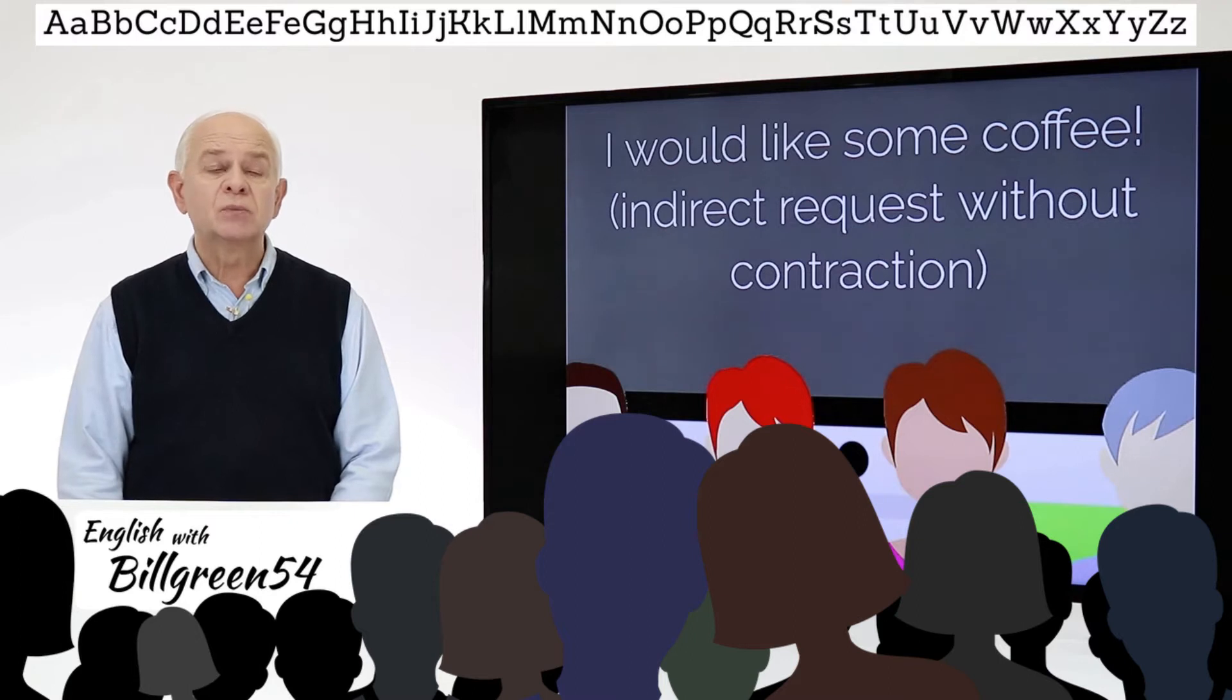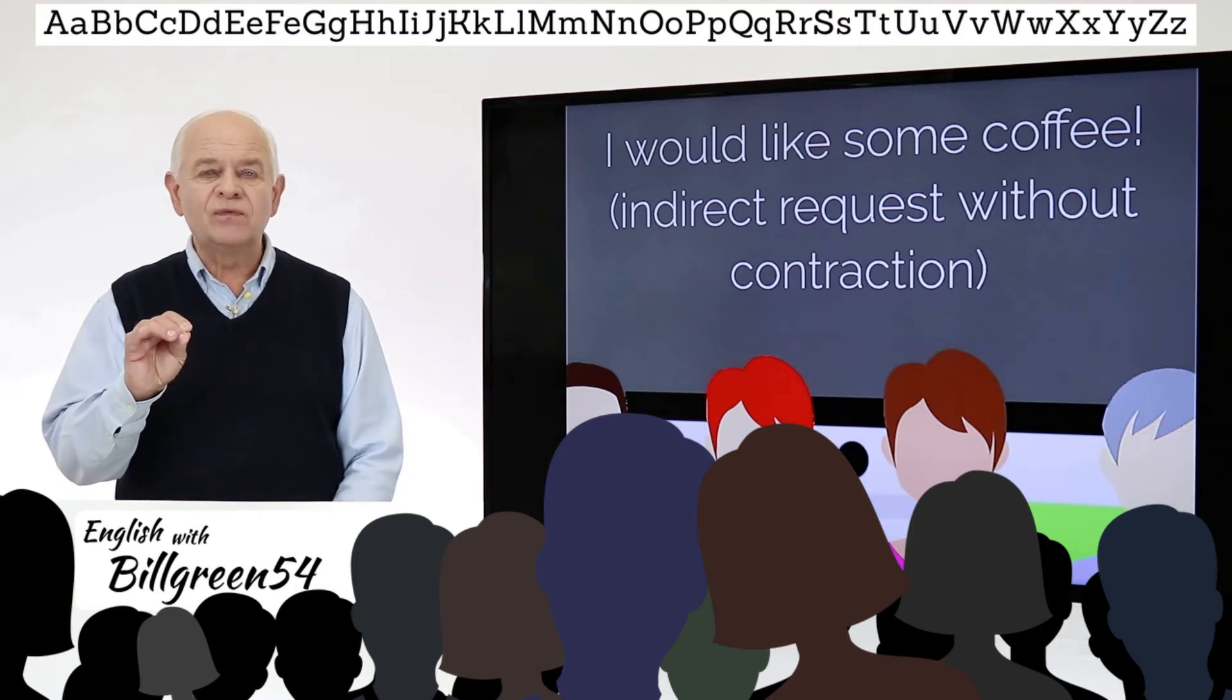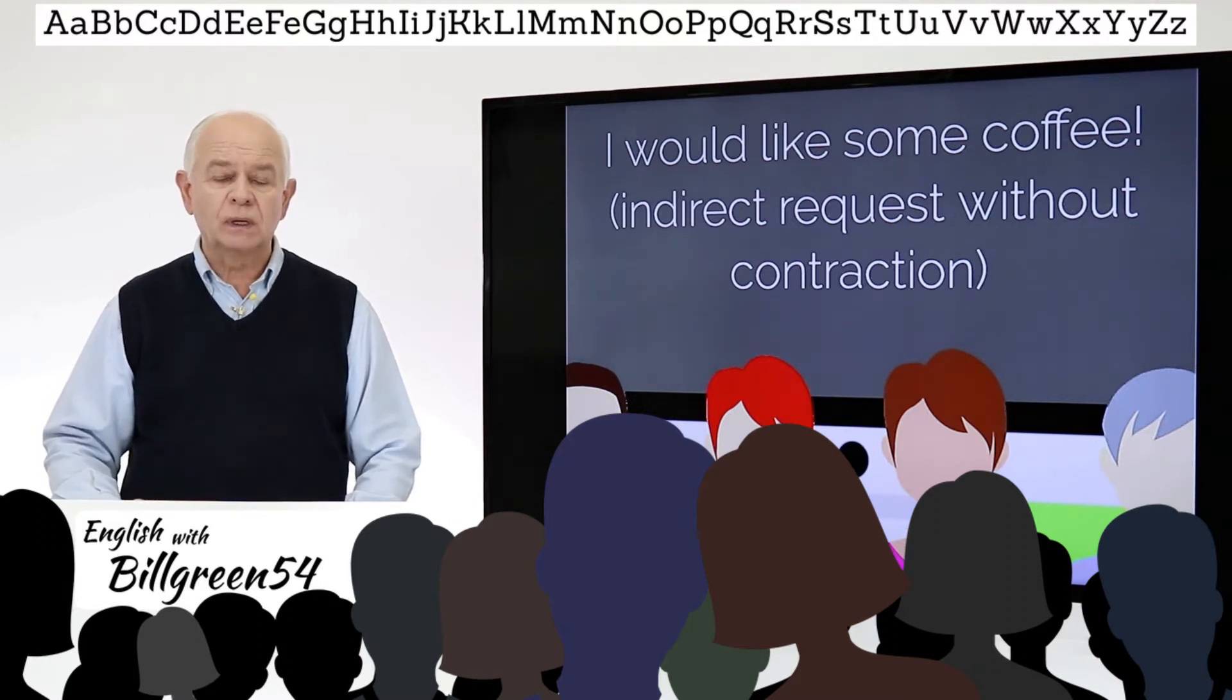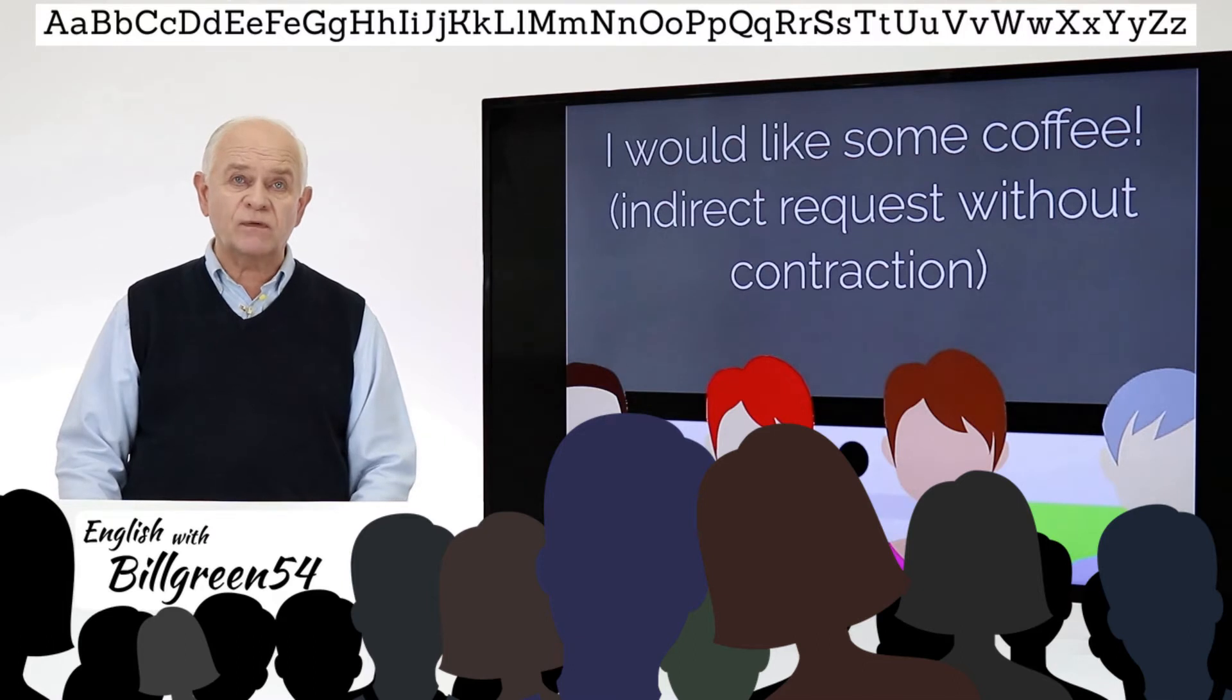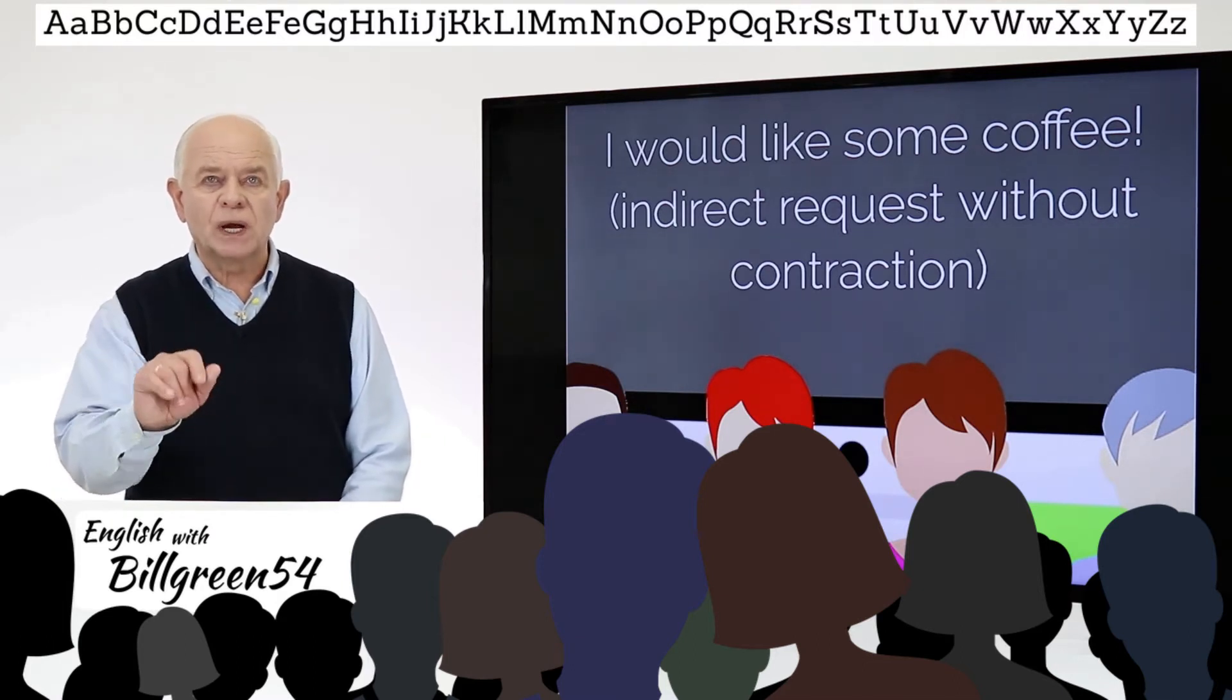Here are some indirect requests in Present Simple. I would like some coffee. Now, I didn't look at someone and say, 'Give me coffee.' I could say, 'Can I have some coffee?' or 'Could I have some coffee?' Those are all direct requests.